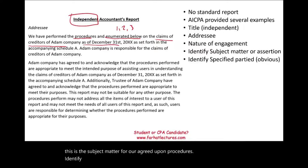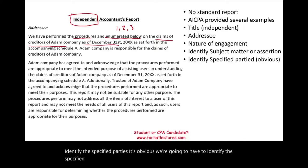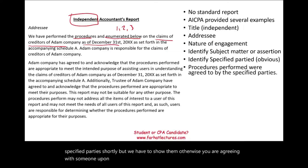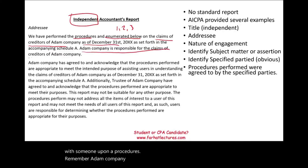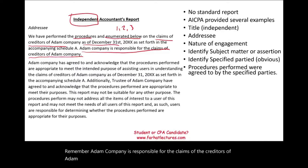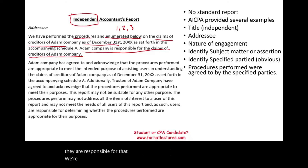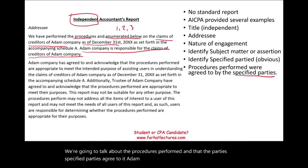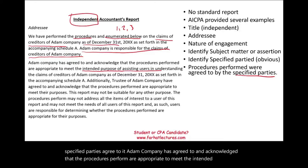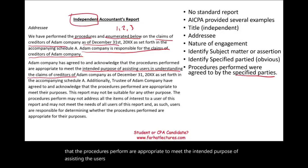We have to identify the specified parties — it's obvious we need to show them. You are agreeing with someone upon a set of procedures. Remember, Adam Company is responsible for the claims of the creditors of Adam Company; we are not responsible for that. Now we talk about the procedures performed and that the specified parties agree to them. Adam Company has agreed to and acknowledged that the procedures performed are appropriate to meet the intended purpose of assisting users in understanding the claims of creditors of Adam Company.